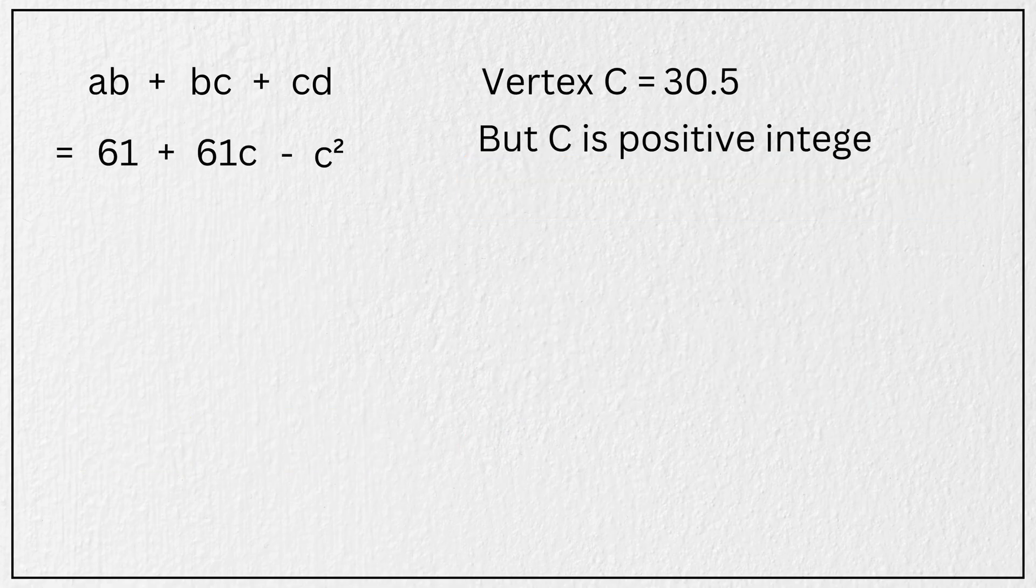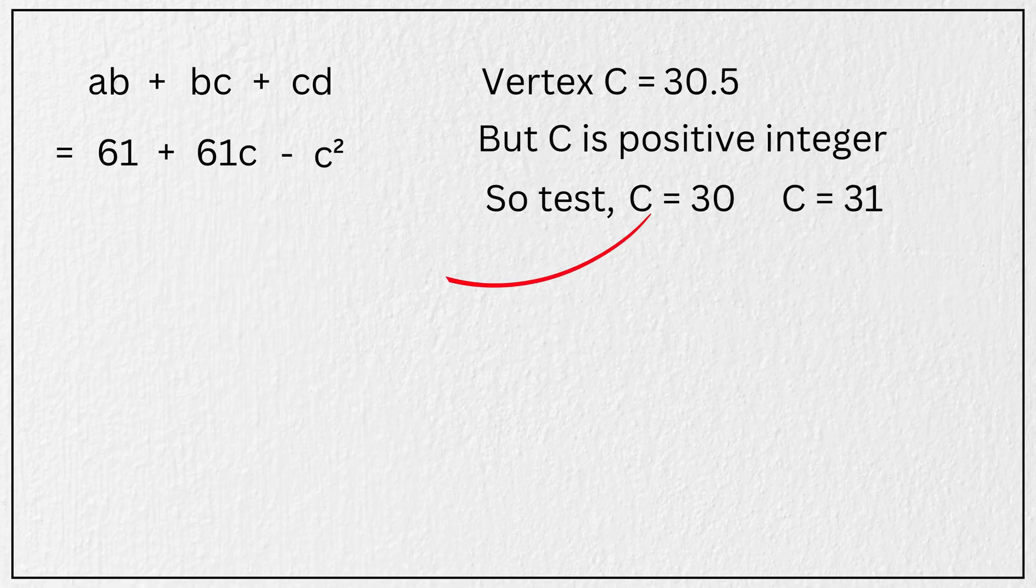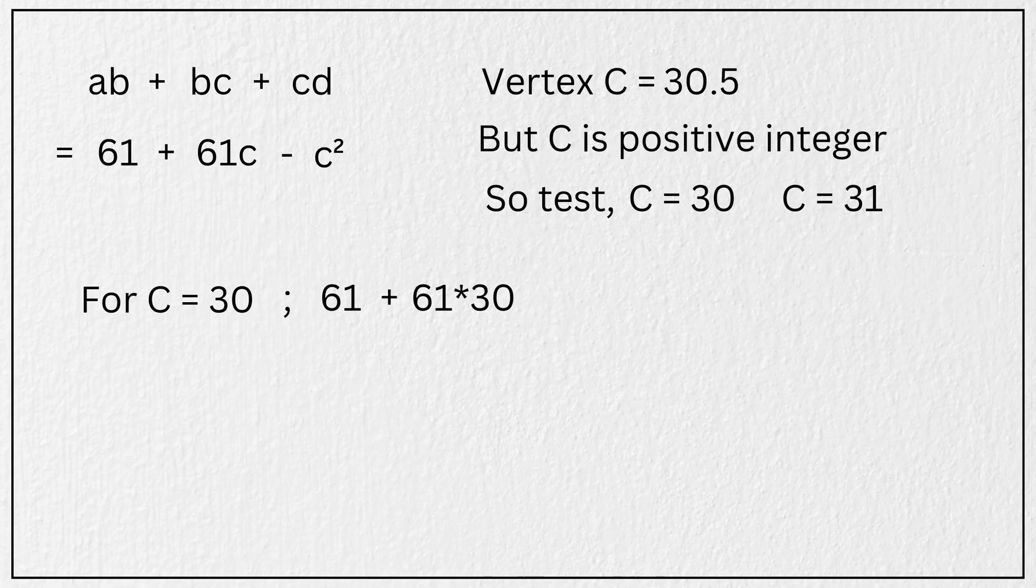But as per question, C has to be a positive integer. So we need to test both the closest integers, which is C equals 30 and C equals 31. So substituting C equal to 30, we get 61 plus 61 times 30 minus 30 square, which simplifies to 991.